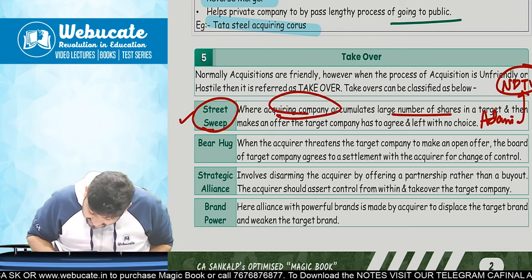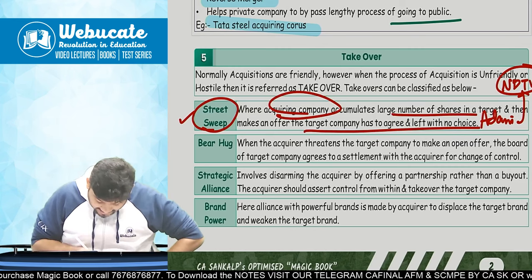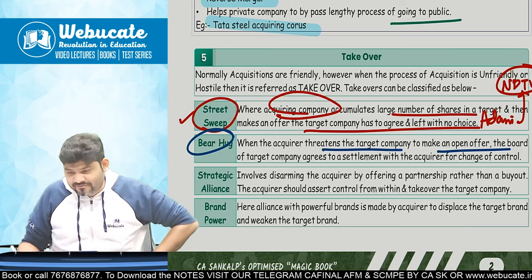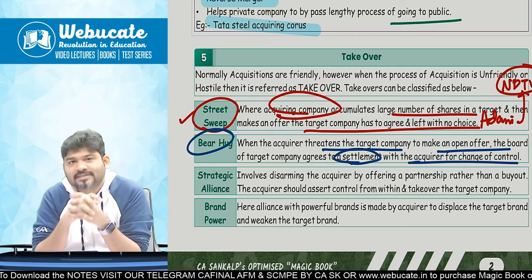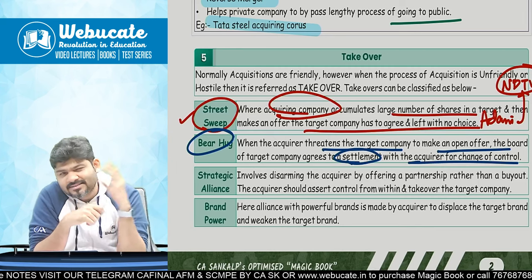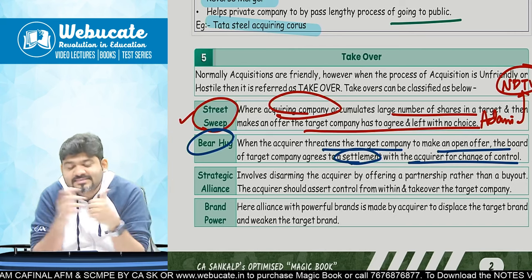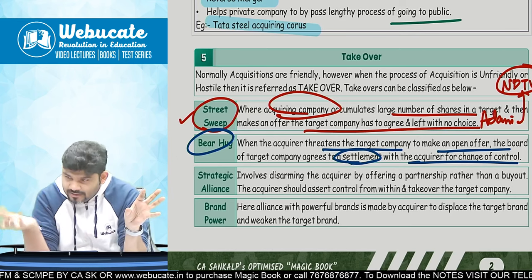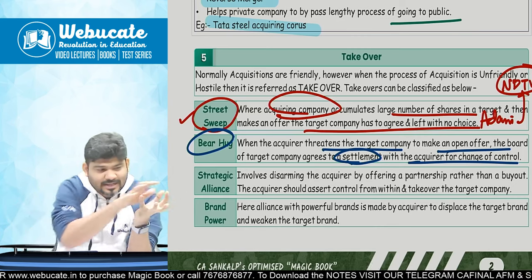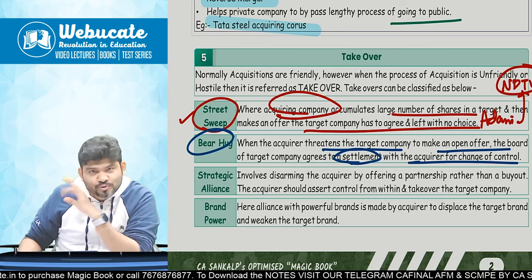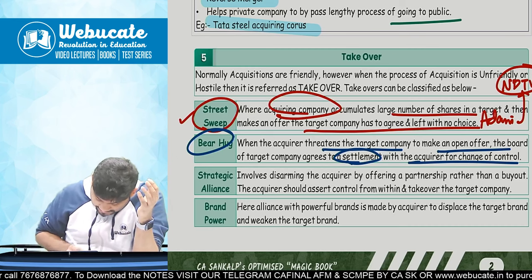So when the acquiring company accumulates a large number of shares and makes an offer, the target company is left with no choice — that is a street sweep. Second is bear hug: the acquirer threatens the target company with an open offer, and the board of the target company agrees to a settlement for change of control. For example, Reliance Retail Ventures Private Limited will threaten a brand like Biba — 'get acquired, you have no choice when Reliance is asking' — and the board agrees to a settlement.